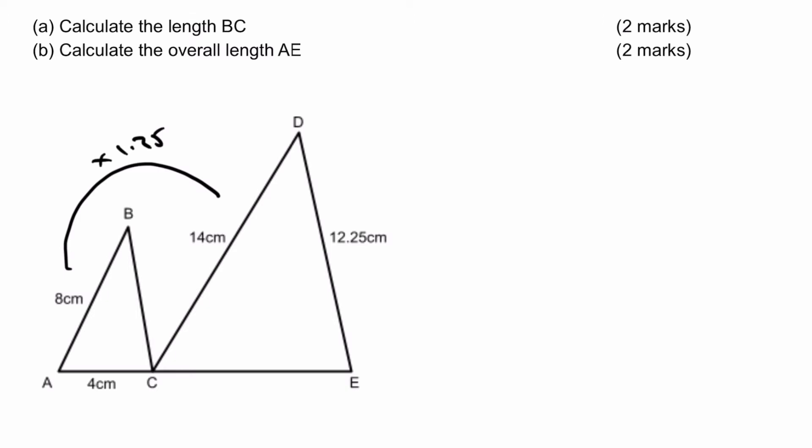It's that scale factor that I need to use. If I'm working out the value of BC, then I know that DE is 12.25, and then I divide it by 1.75, and that would give me the answer to part A. So A is going to be 12.25 divided by 1.75, and you'll get that BC equals 7 centimetres.